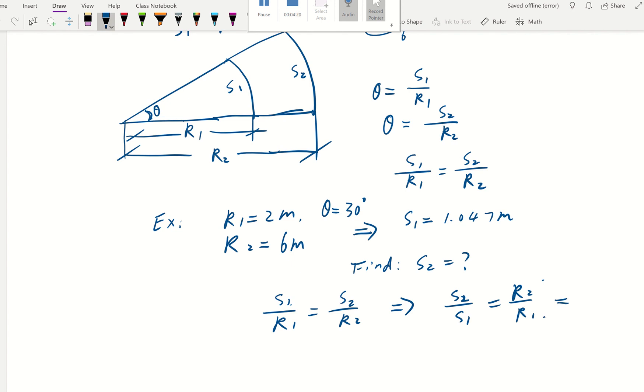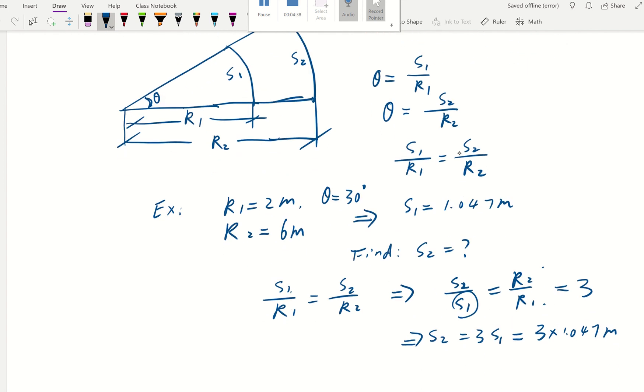Then we know r2 is 6 meters and r1 is 2 meters, so the ratio is 6 over 2, that's 3. Since you already know s1, you can quickly figure it out. s2 will be just three times s1, it's proportional: 3 times 1.047, that's basically π, 3.14 meters.